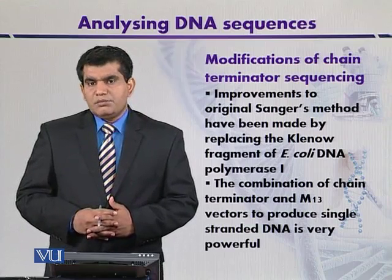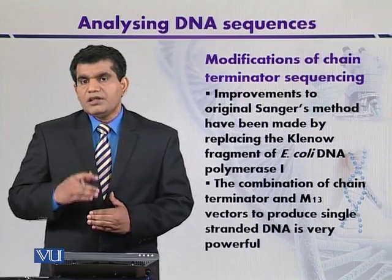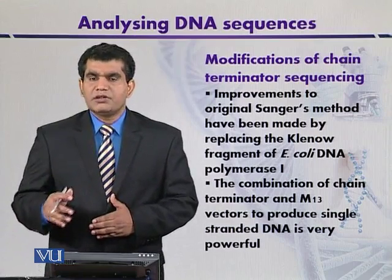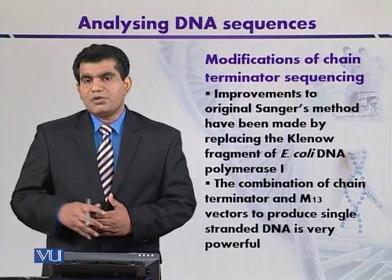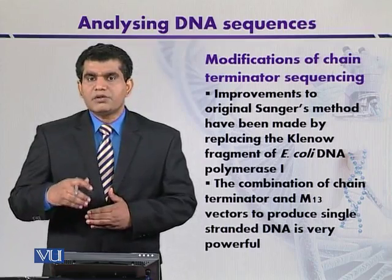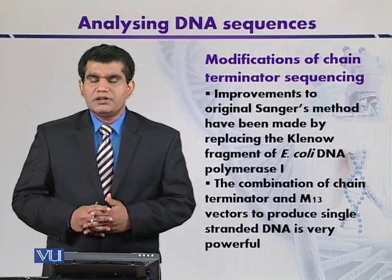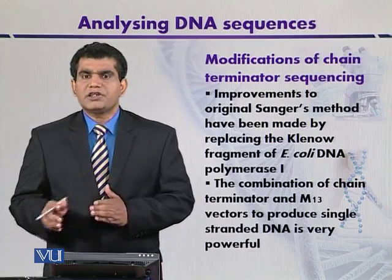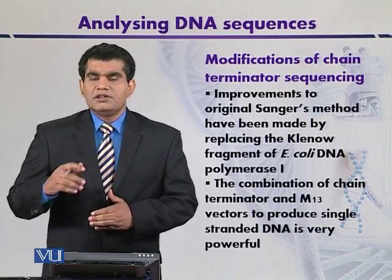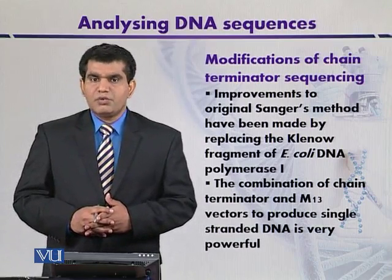Another point about Taq DNA polymerase: if alanine or phenylalanine is replaced with tyrosine, then this Taq DNA polymerase cannot distinguish between normal deoxynucleoside triphosphate and dideoxynucleoside triphosphate. So the discrimination between the two is lost as a result of this minor change in the amino acid sequence of Taq DNA polymerase.